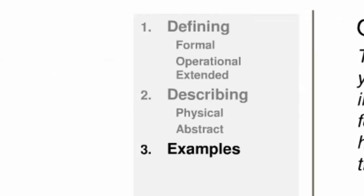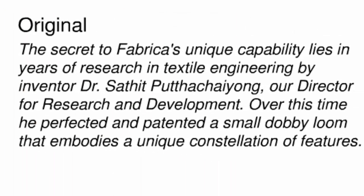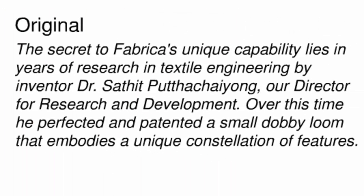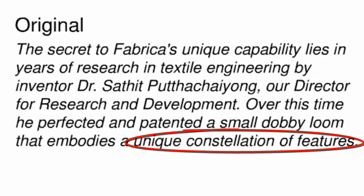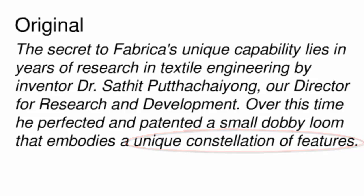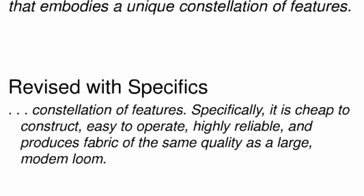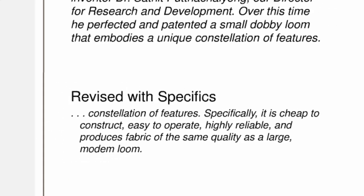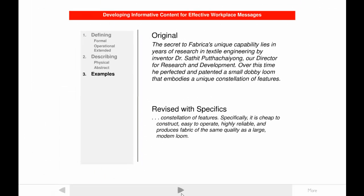Using examples is the third technique for developing informative content. Consider how well the audience understands the phrase 'unique constellation of features.' The revised version does a much better job because it lists four specific features that make Fabrica's loom unique. Examples are critical for non-experts because they make what is abstract more concrete.